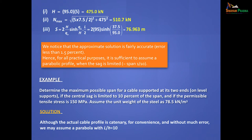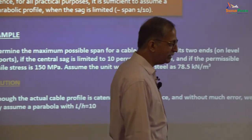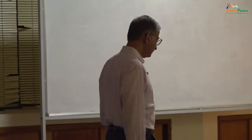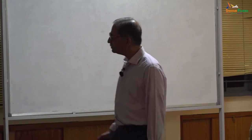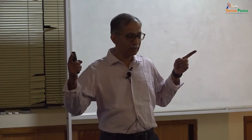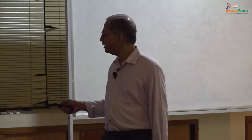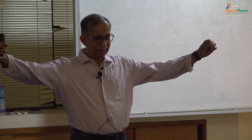I want only L. At least show me a way to do it — just the span I want, horizontal span. Small h is given: 0.1 times capital L. What is Q naught? Figure out. What is the total weight of the cable? Without much error, we may assume parabola. So let's go do it together. The total weight of the cable — gamma A S, where S is the total length. So you know the total length because h/L is given. Total length can be written as 1.026L.